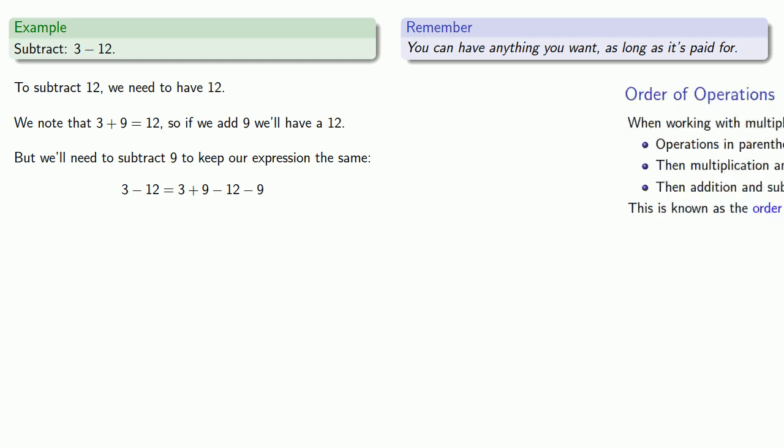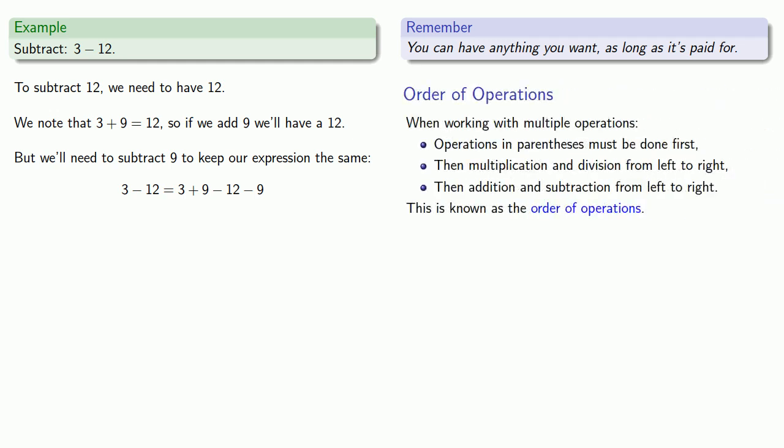Now we invoke our order of operations. We have to do addition and subtraction from left to right. So we'll take care of 3 plus 9 first. 12 minus 12 is 0. And now we're trying to take 9 away from 0. If we couldn't take 12 away from 3 how can we take 9 away from 0?